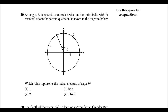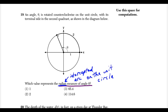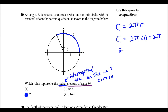Question 19: we have angle theta on the unit circle and want its radian measure. Radians are defined by the intercepted arc on the unit circle. The arc length intercepted by theta is labeled 2 on the diagram. To verify: the full circumference of a unit circle is 2π ≈ 6.28, and the arc of 2 is roughly one-third of that — which is consistent. So the radian measure of theta equals 2, which is choice 2.